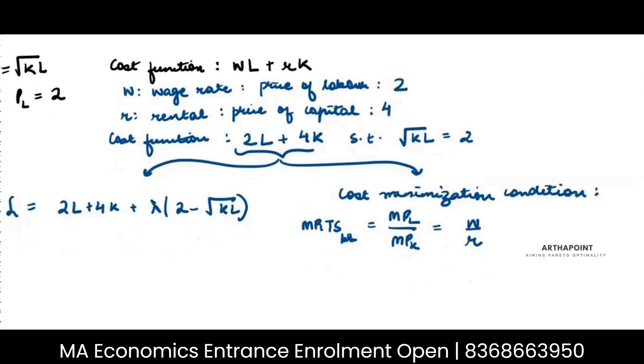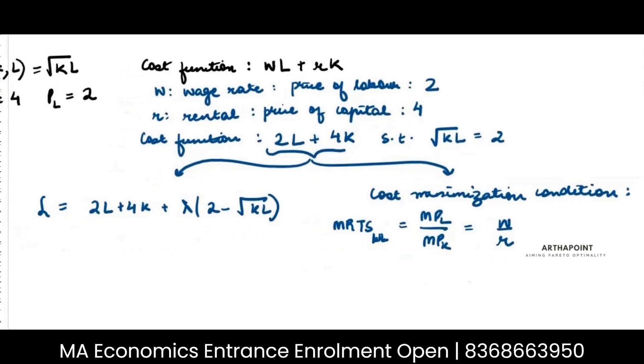So I want to find marginal product of labor now. So my production function is root KL. Marginal product of labor is given by what? How output changes when capital changes. So this will be differentiate this function with respect to K and you will get 1 by 2 root K into root L. Very simple right? You can write this as root K into root L. Root L is a constant. I am doing a partial derivative only with respect to K and I am getting this.